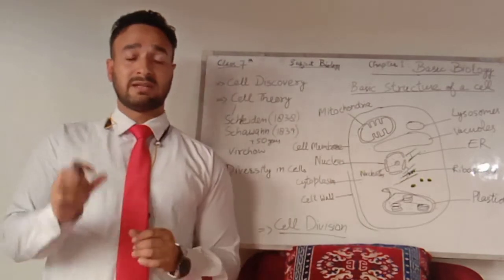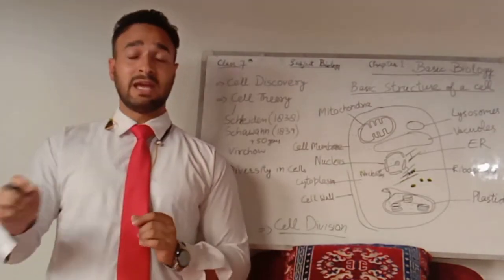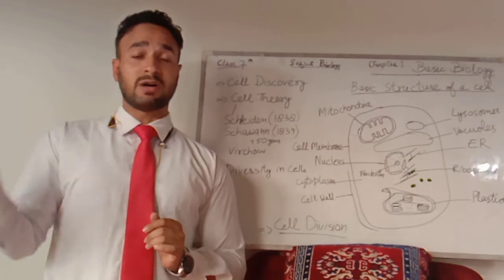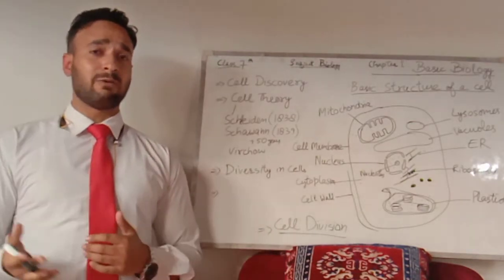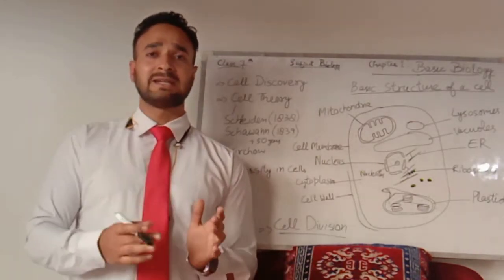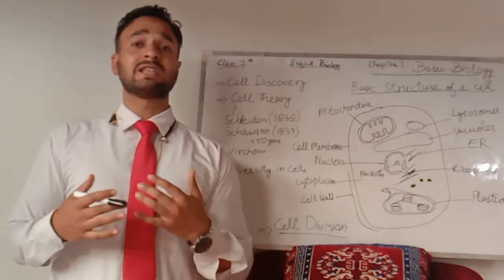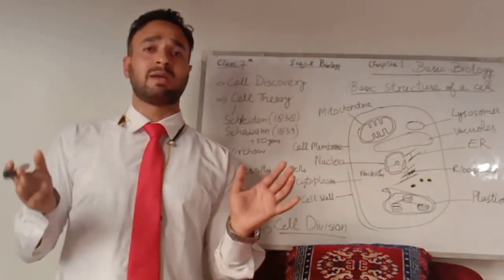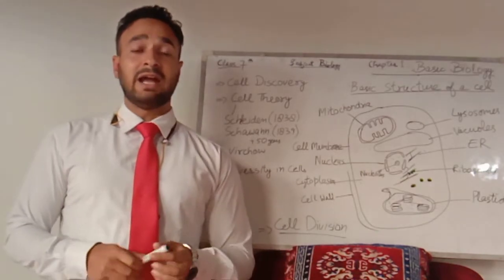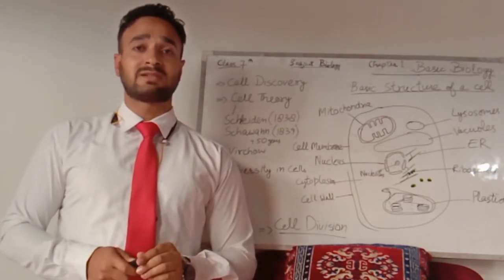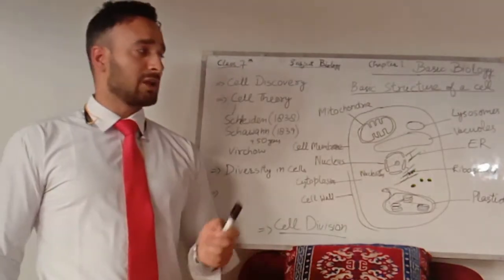The egg of a hen is about 3 centimeters long — that is also a cell. And the largest cell is the egg of the ostrich, which is about 9 to 15 centimeters long. So cells vary in size and shape. Some cells are spherical, some may be oval, and some are thread-like, like our neuron cell. The neuron cell of an elephant is about three meters long.